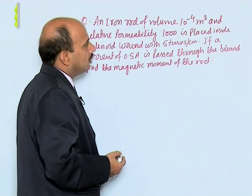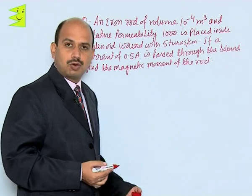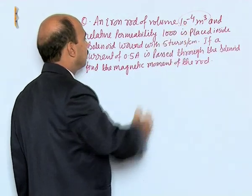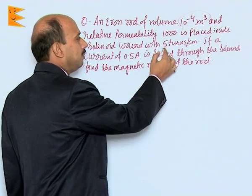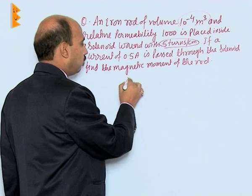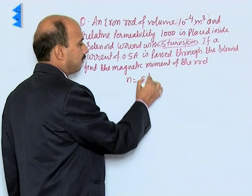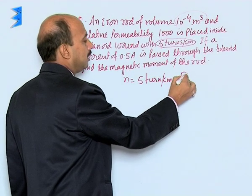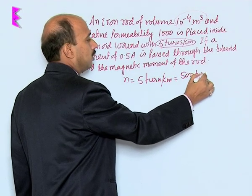So you have to get the magnetic dipole moment of the rod. You have been given the total volume and 500 turns per centimeter. So n is equal to 5 turns per centimeter, that can be written as 500 turns per meter.